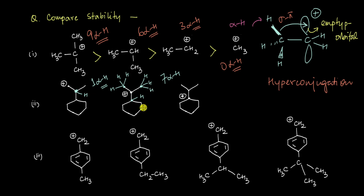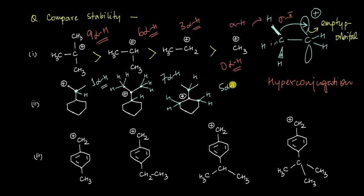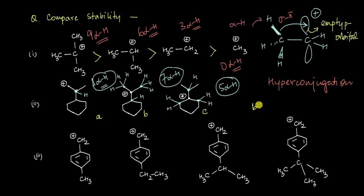This cation is definitely more stable than the one with one alpha hydrogen. Finally, the third cation has carbon atoms directly attached, and counting the alpha hydrogens: one carbon has two hydrogens, another has two, and another has one — giving a total of five alpha hydrogens. So calling the cations A, B, and C: B has seven alpha hydrogens, C has five, and A has one — so the stability order is B > C > A.